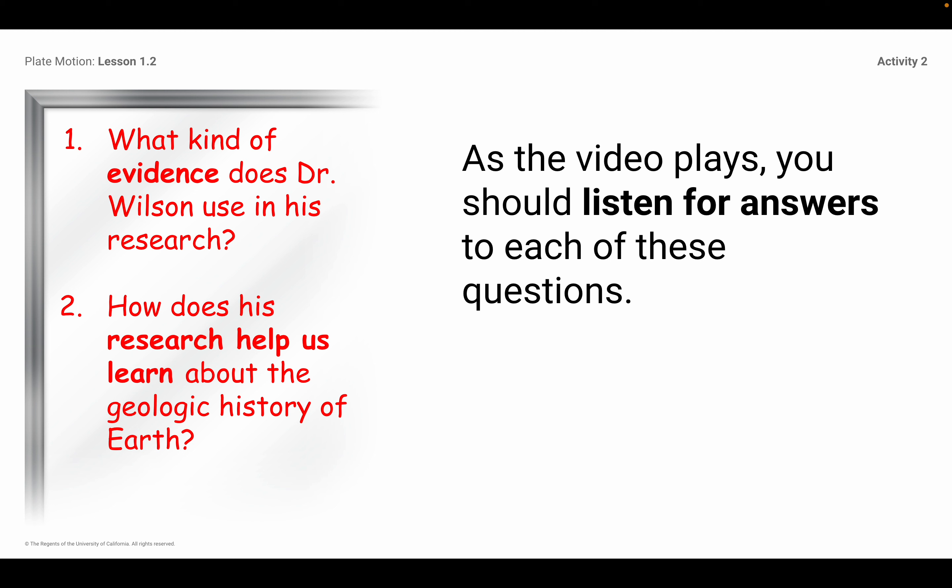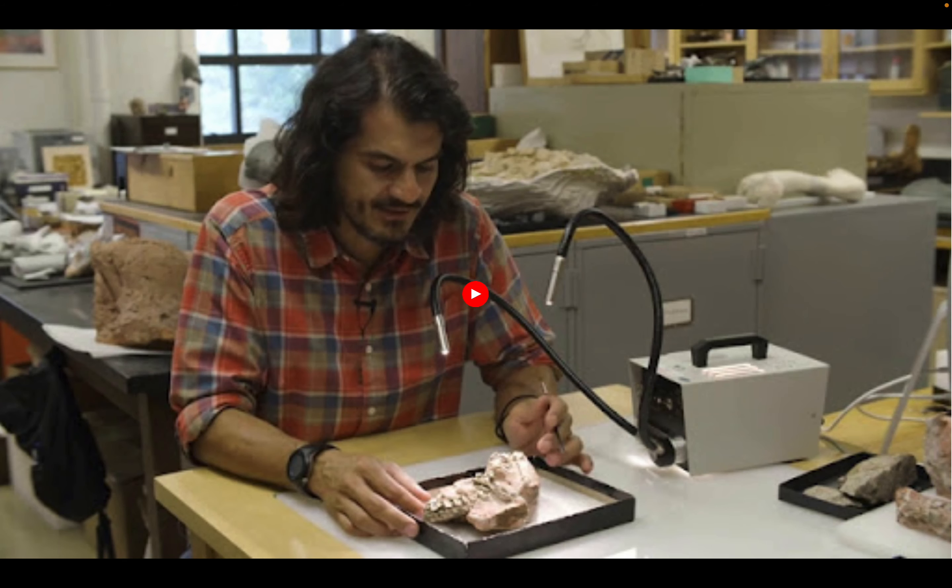It's a fascinating and really interesting video. I've got two questions for you to think about as you're watching. The first one: what kind of evidence does Dr. Wilson use in his research — what is he looking for that he can bring back as evidence to answer his research questions? And number two: how does his research help us learn about the geologic history of Earth, or the history of the outer layer of Earth? Right now is the time where I want you to pause this video, go back to Amplify, and play the video about this very interesting researcher.